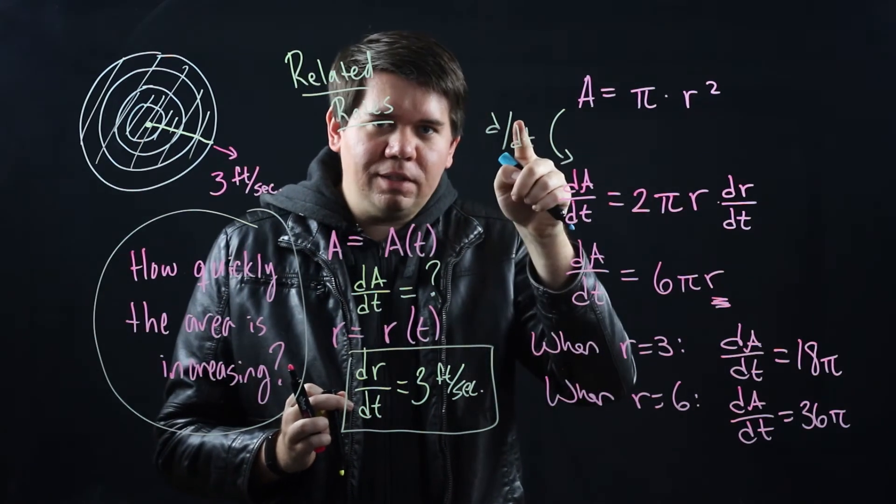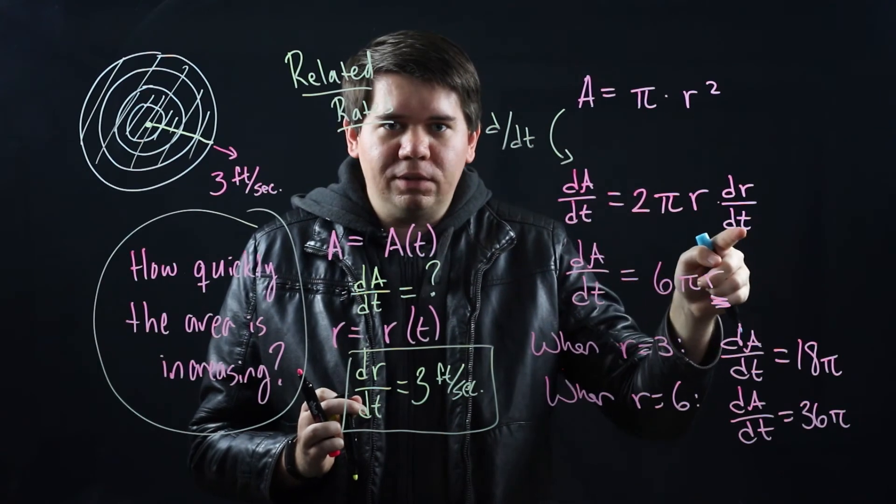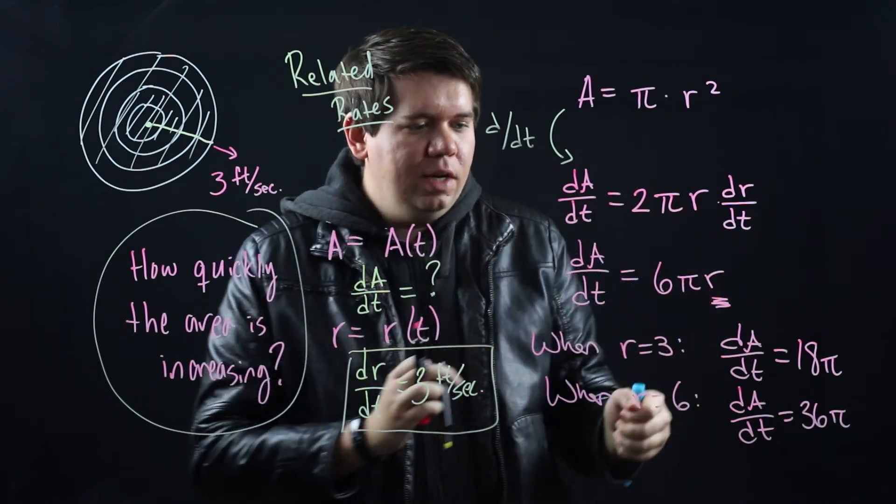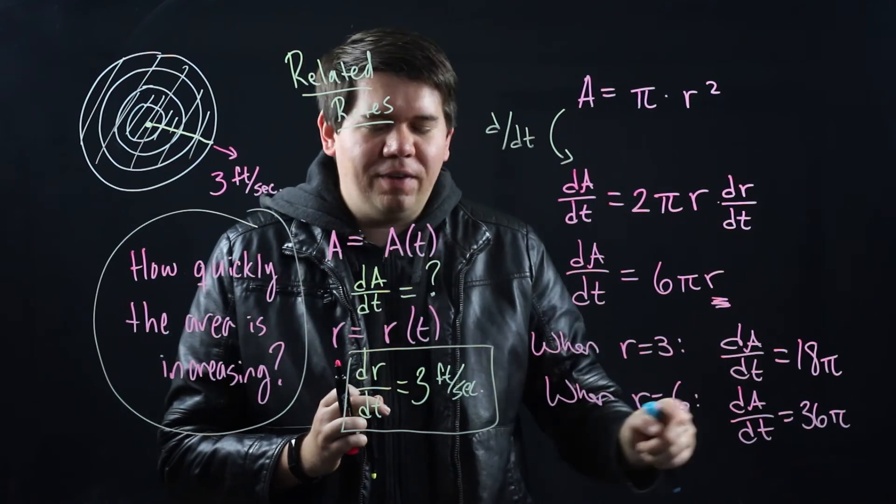Then we took the derivative to get a formula that involves the rate of change, the derivatives. We plugged in what we knew and we got our result and we could see how the result varied for different values of r.